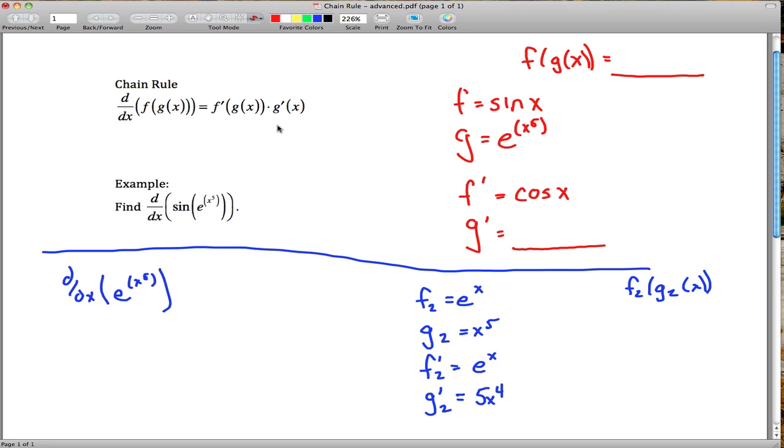And now we can use our chain rule over here to figure out this derivative right here. Maybe I'll skip ahead a little bit. This will end up being 5x to the fourth times e raised up to the x to the fifth. So the derivative of what we have called g up here is this guy. So what goes here is 5x to the fourth times e raised up to the x to the fifth.